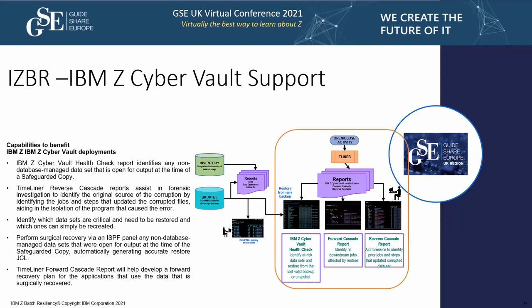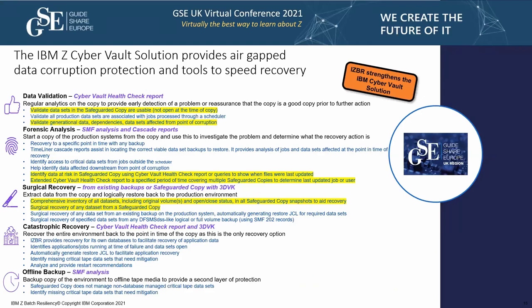The forward cascade report can then be used to develop a forward recovery plan to continue running the business. The stages within what can be performed within the CyberVault include data validation — things that happen on a regular basis to ensure recoverability, done ahead of time rather than at catastrophe time. Where IZBR comes into play is in forensic analysis by knowing which datasets could be affected and which were touched by various jobs, plus the surgical recovery of individual datasets. If doing a catastrophic recovery, the CyberVault Health Check Report shows which datasets were open for output, allowing for more targeted surgical recovery.